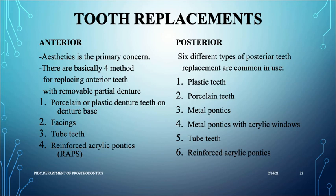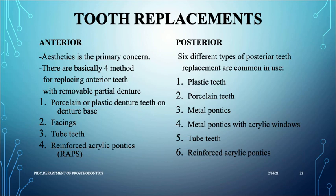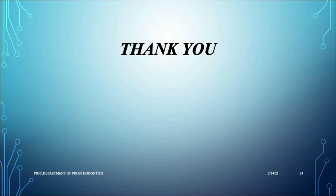Anterior tooth replacement is primarily for aesthetics while posterior tooth replacement is for mastication. There are four methods for replacing anterior teeth: porcelain or plastic denture teeth on a denture base, facings, tube teeth, and reinforced acrylic pontics. For posterior replacements, options include plastic teeth, porcelain teeth, metal pontics, metal pontics with acrylic windows, tube teeth, and reinforced acrylic pontics. Thank you for listening — for any questions please approach the Department of Prosthodontics.